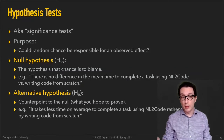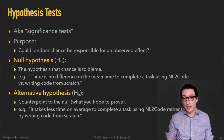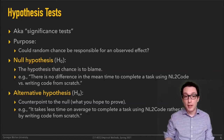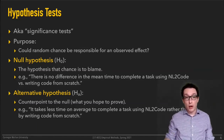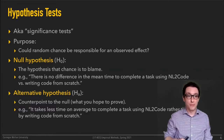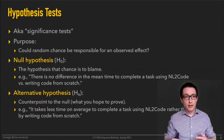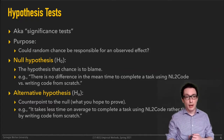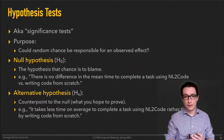Maybe you've run an experiment, maybe you're doing an observational study, maybe you've collected data somehow, and you want to be able to claim that whatever differences you're observing are not due to random chance — they're due to the thing you actually care about in your study. Typically this means you have some null hypothesis that you're trying to disprove, and an alternative hypothesis that you accept instead if that's the case.